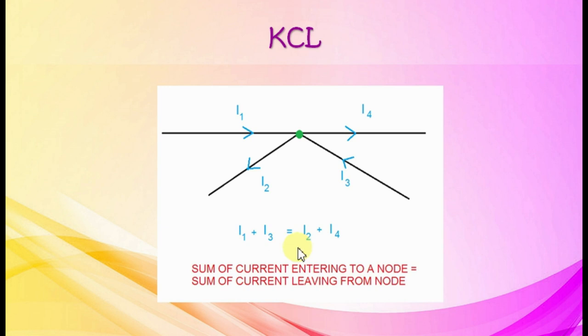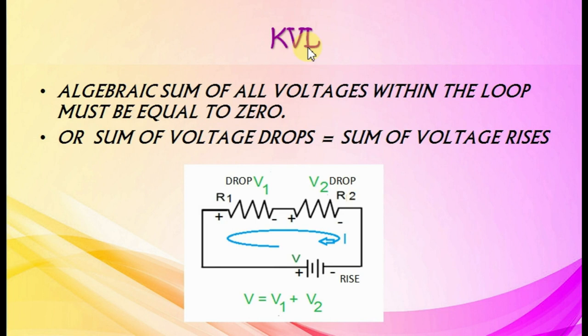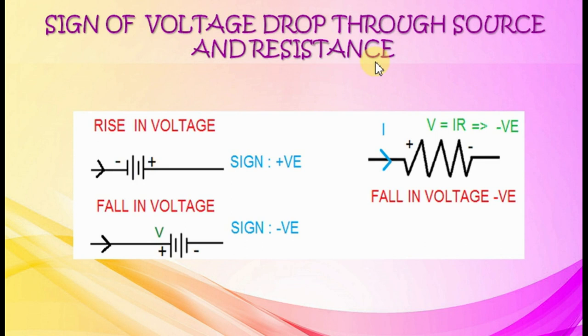Kirchhoff's voltage law: the algebraic sum of all voltages within the loop must be equal to zero, or sum of voltage drops equals sum of voltage rises. Regarding sign of voltage drop through source and resistance: a rise in voltage means current flows from negative to positive; a fall in voltage means current flows from positive to negative. Whether source or resistance, a rise in voltage has a positive sign.